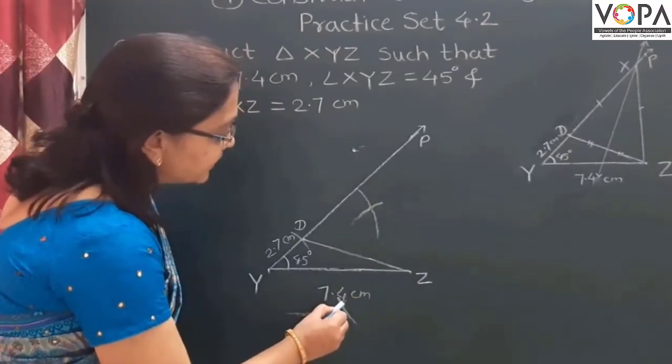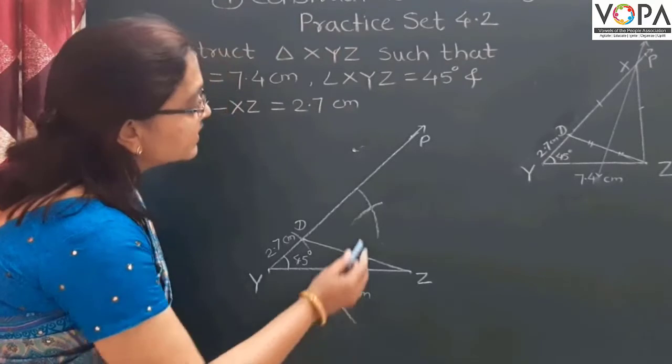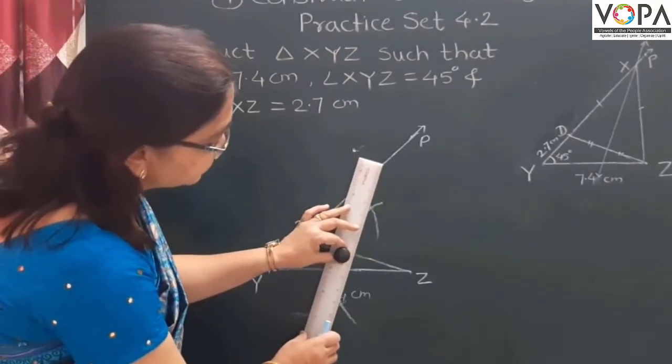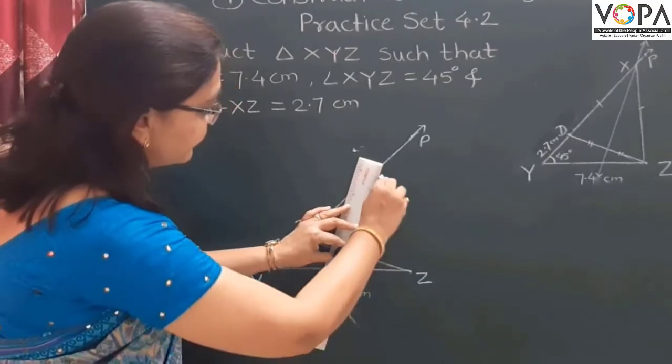Now, this is the point of intersection and this is the other point. Join these two points.